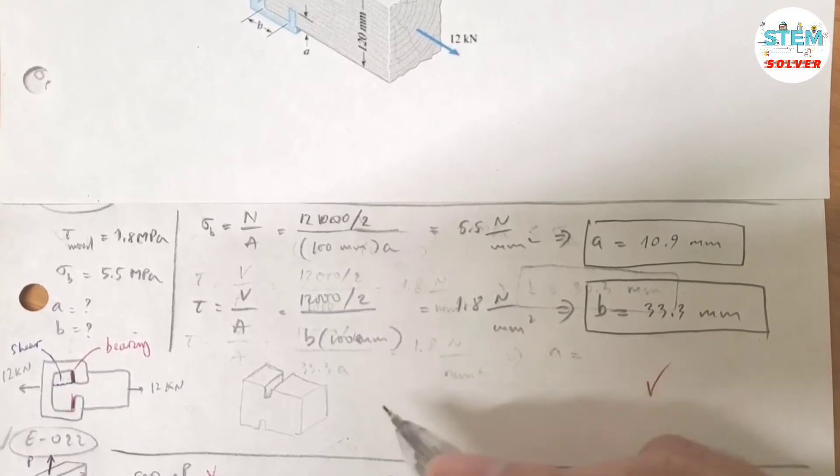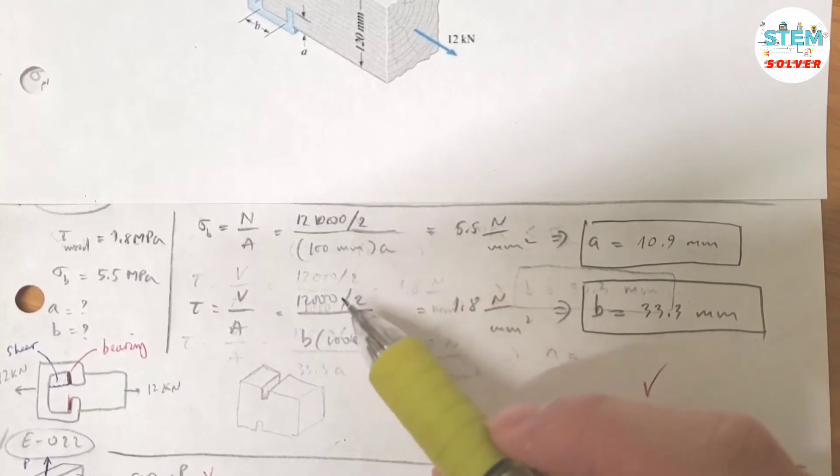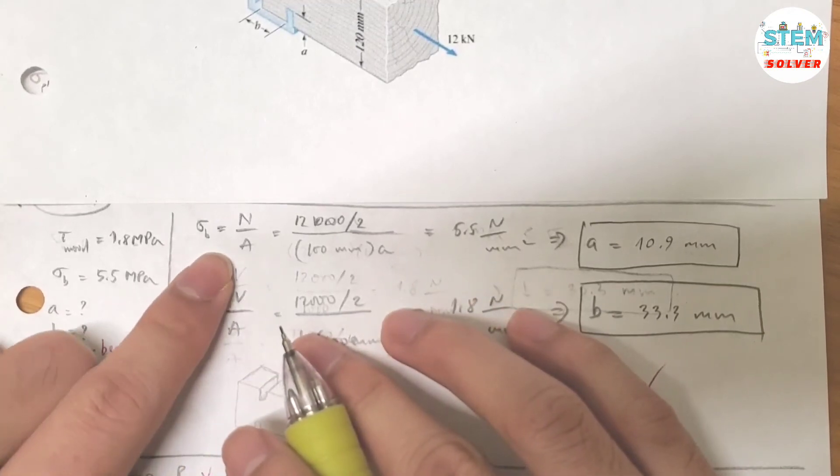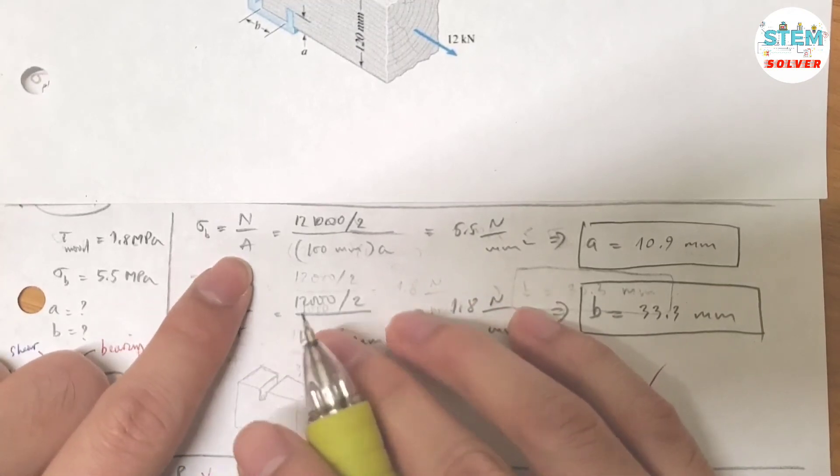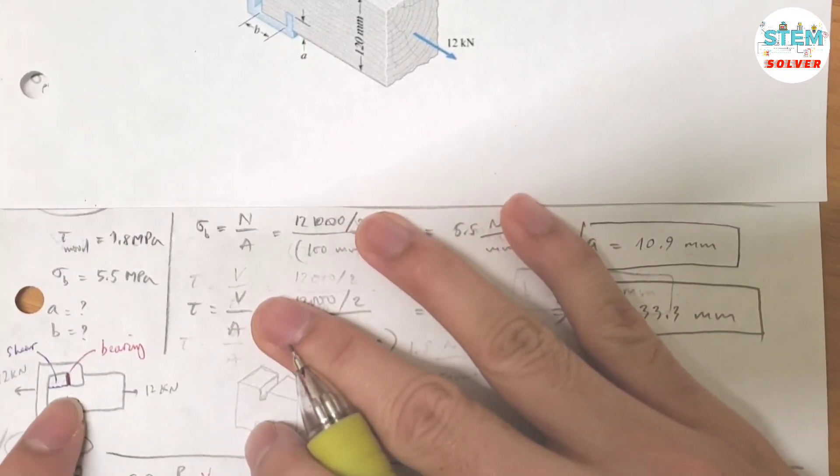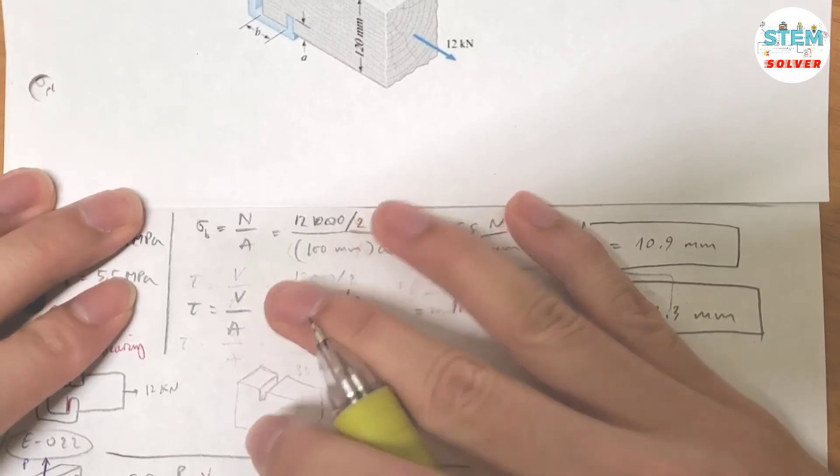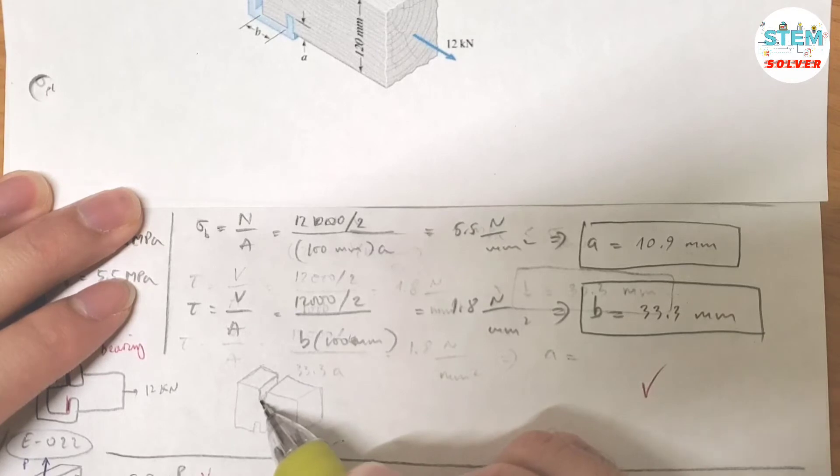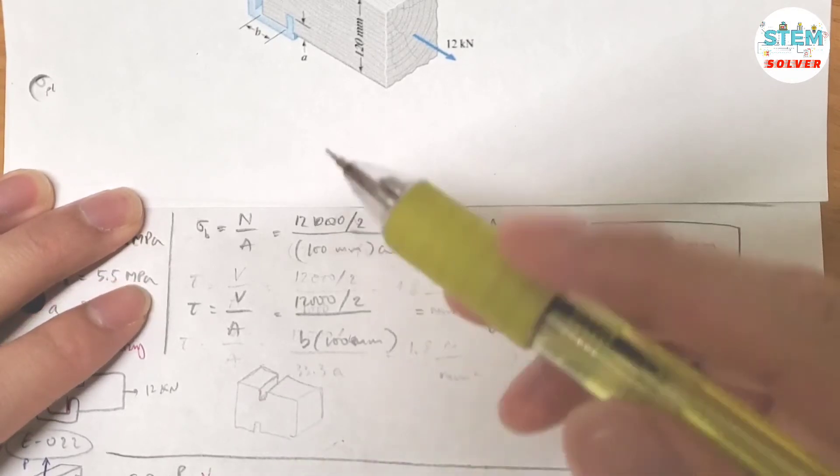First of all, we need to find the bearing stress. The formula for the bearing stress is equal to the normal force divided by the area. In this case, looking back to this one, the bearing stress is this part. The area of that part is this groove right here. So, go down how much and the length is how much, so that is the area.